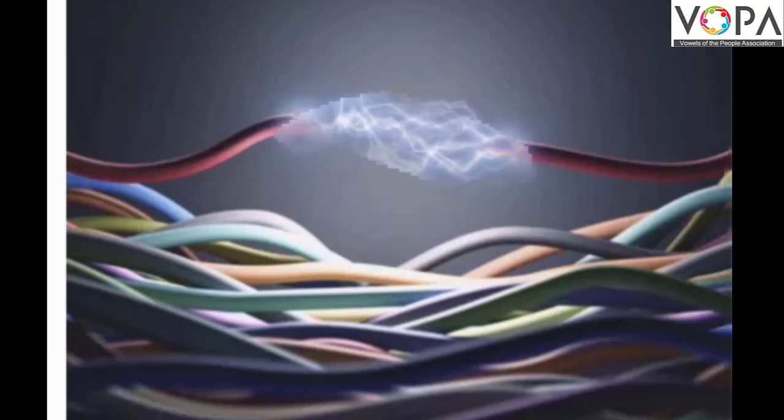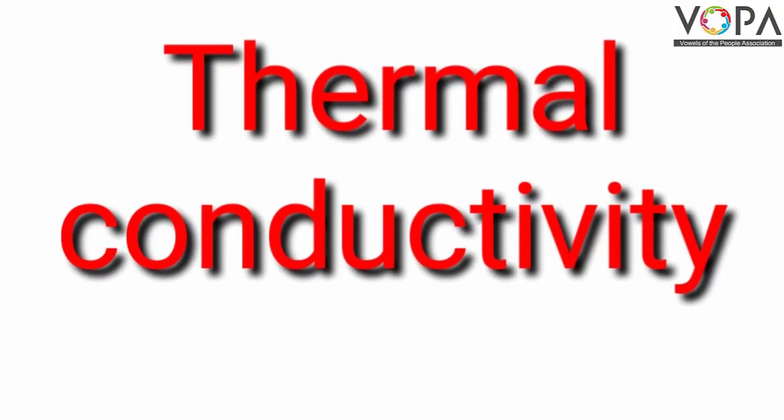The next property of metals is thermal conductivity. Thermal conductivity means metals allow heat to flow through them. This property is called thermal conductivity.